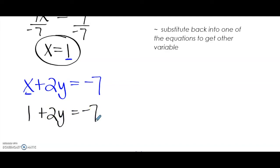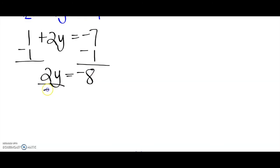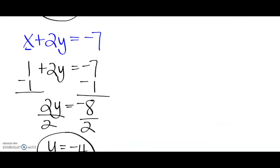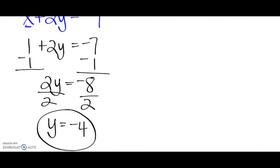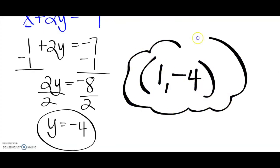We are going to subtract 1, use inverse operations, subtract 1 from both sides. That leaves us with 2Y equals negative 8. Divide both sides by 2, and I get Y equals negative 4. So my ordered pair is X equals 1, Y equals negative 4. So (1, -4) is our solution to the system.